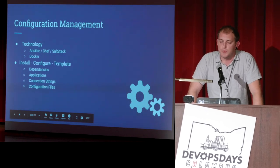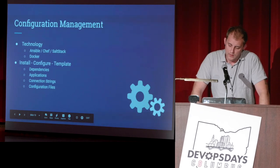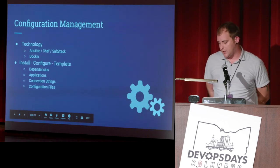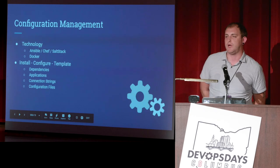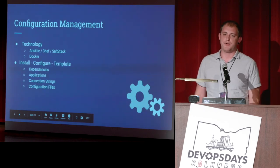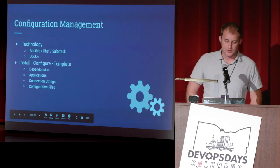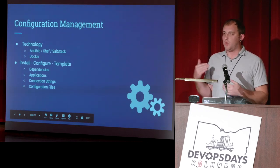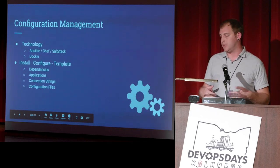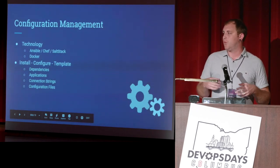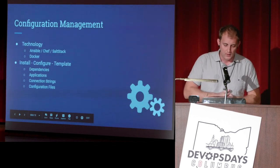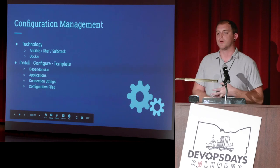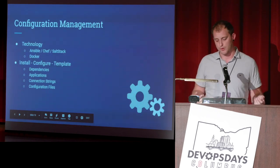Configuration management is used to install, configure, and template out your dependencies, applications, connection strings, and configuration files. The big one is connection strings or endpoints to other applications that you need to depend on — being able to template that out is super important. We typically lean towards Docker for a lot of this. Docker is pushing the idea that you have to use environment variables — if you rebuild your Docker image for a different environment, you're not doing it right. Using environment variables is the gold standard. These technologies can build servers from the ground up through source control: install your dependencies, pull down the version of the application you need, and configure your connection strings to other applications and data stores.